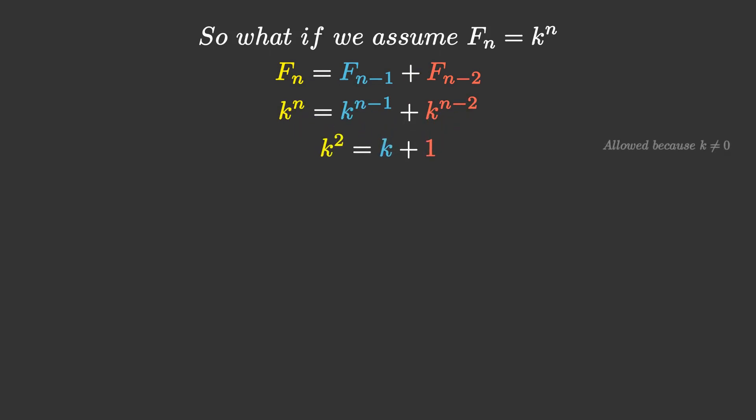As we know the Fibonacci numbers above n equals 0 are non-zero, we know k isn't 0, and we can divide both sides by k to the n minus 2, producing a quadratic which we can quickly solve with the quadratic formula to get two solutions, which we'll call phi and psi, explaining why the Fibonacci sequence doesn't have a perfect geometric sequence, as it's basically combining the two sequences.